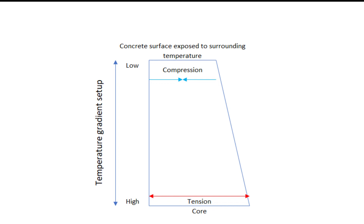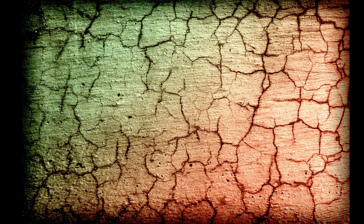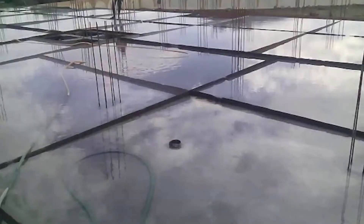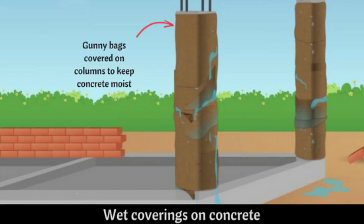The resultant tensile force generated due to this — if it exceeds the tensile strength of concrete — cracks will develop. Thus, it is very important to keep a check on the temperature gradient of concrete. According to the American Concrete Institute ACI 301 specification for structural concrete, the maximum temperature gradient should be limited to around 19 degrees centigrade. Ensuring proper curing of concrete will help bring the core temperature down, thereby reducing the temperature gradient.